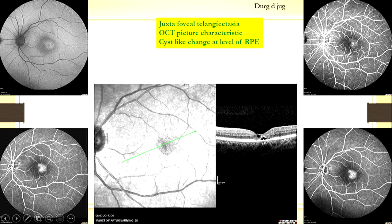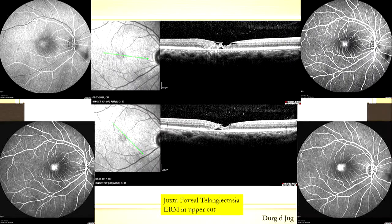This is a patient with juxtafoveal telangiectasia. What you see here — these cysts, normal foveal contour — these are actually degenerative cysts. These are degeneration of the Müller cells which is causing this. And this does not need treatment. This is not a treatable situation.